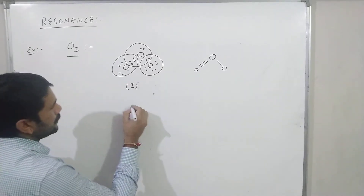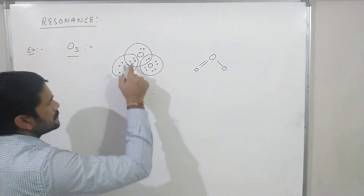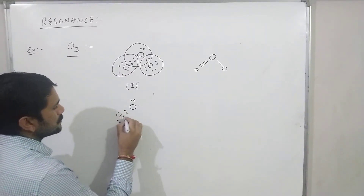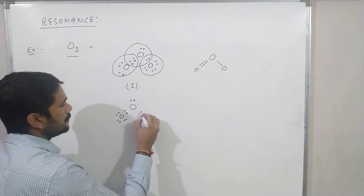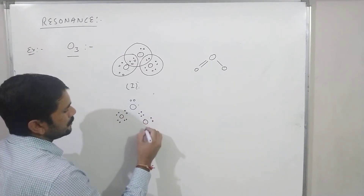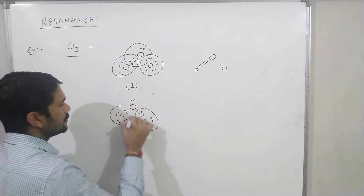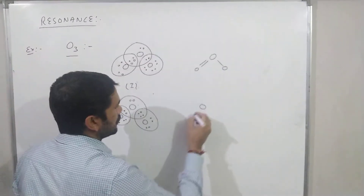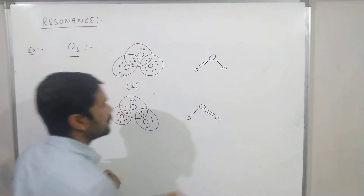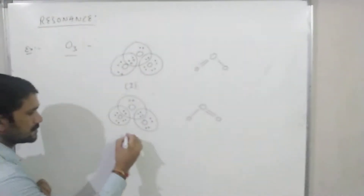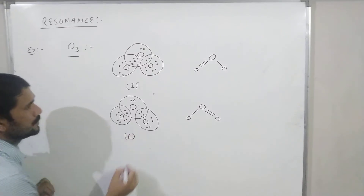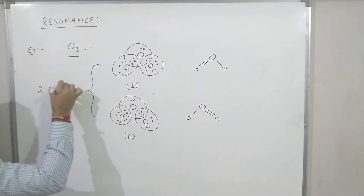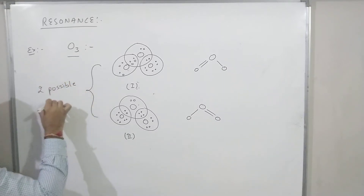Another possibility is that these four electrons are shifted to form a different structure. According to this second structure of the ozone molecule, all oxygen atoms have a complete octet and a double bond. So these are the two possible Lewis structures of the ozone molecule.